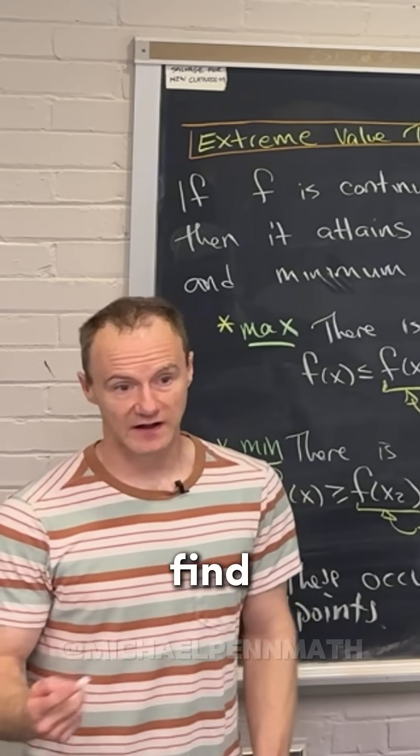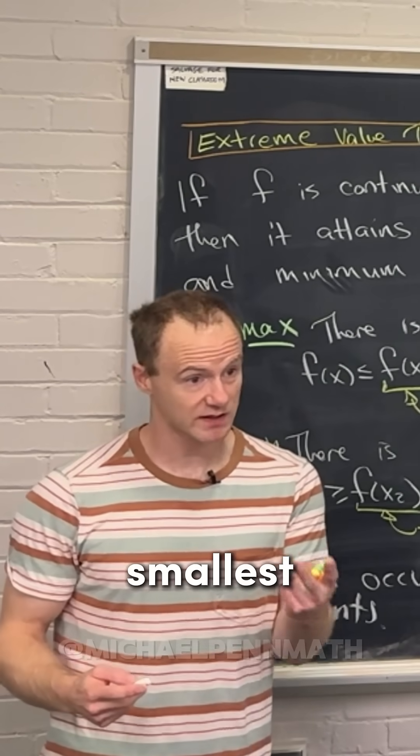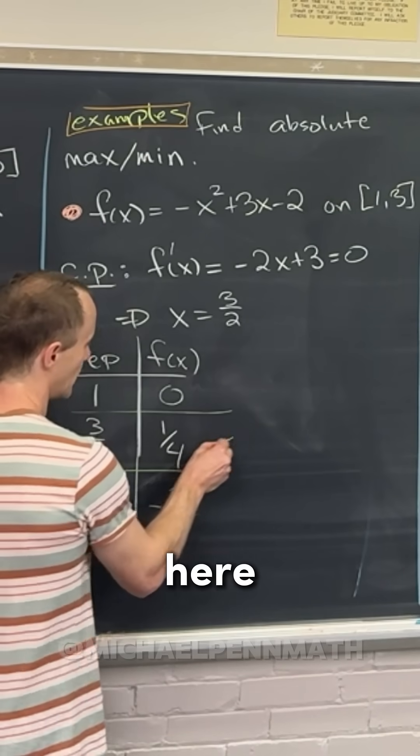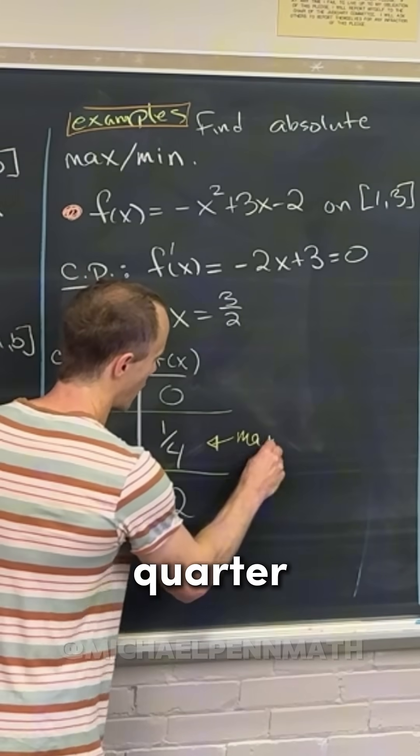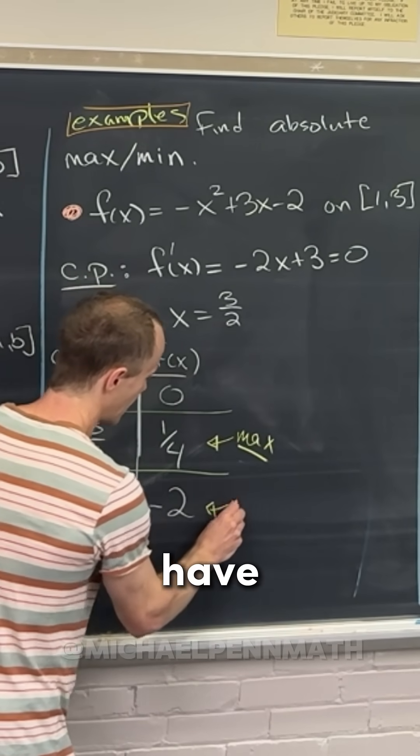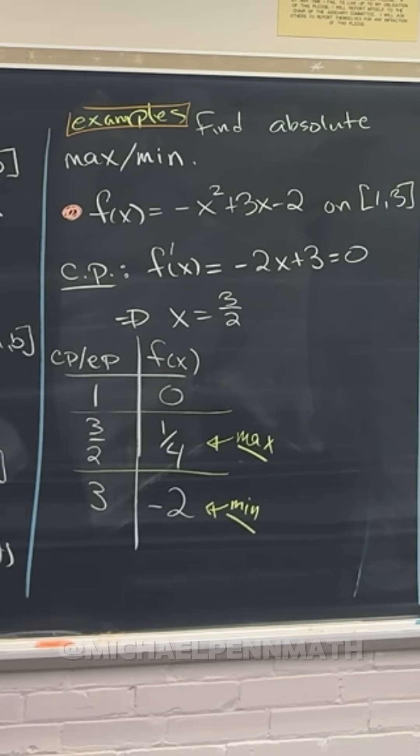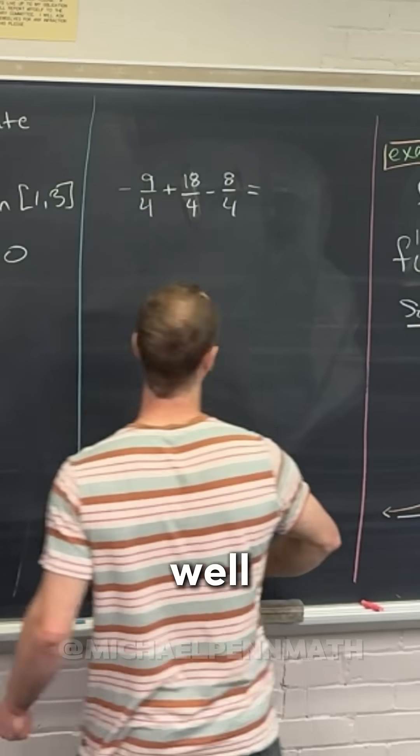So now we can just look at the right-hand side of our chart, find the biggest number, find the smallest number. So that means here we have a maximum of 1/4 and here we have a minimum of negative 2. So how would you finish this thing off?